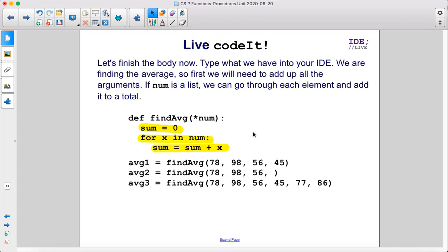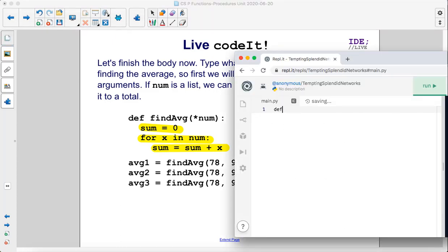Let's finish the body now. Type what we have into your IDE. So defining the findAvg function, asterisk num, colon, sum equals 0. Then we're going to go through each element of the list. So for x in num, we're going to add it to the sum. So we can write sum equals sum plus x or we can just write plus equals x. That's the shortcut.